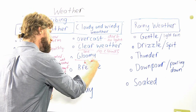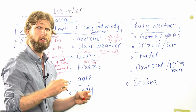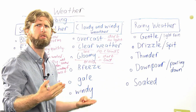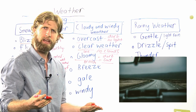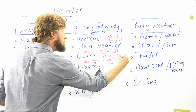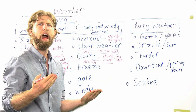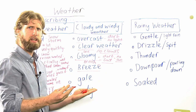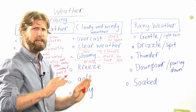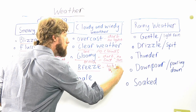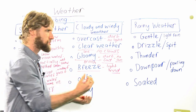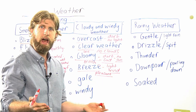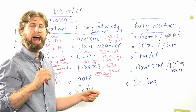Gloomy is a British word meaning very dark and very sad. 'Sometimes the weather in England can be so gloomy' — meaning no sun and very depressing. Next is breeze — a light wind, not strong, and usually very pleasant. For example, 'It was very hot today but there was a nice little breeze and that made it so much better.'